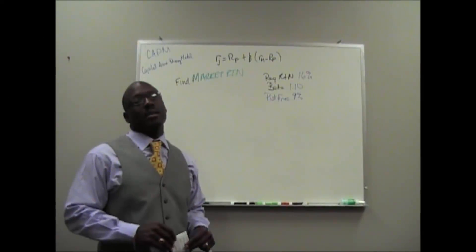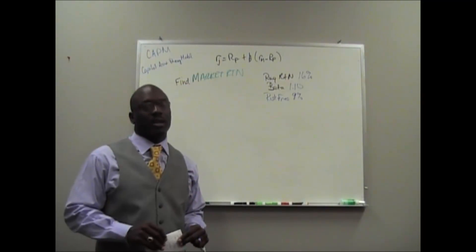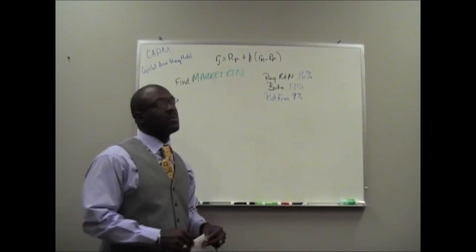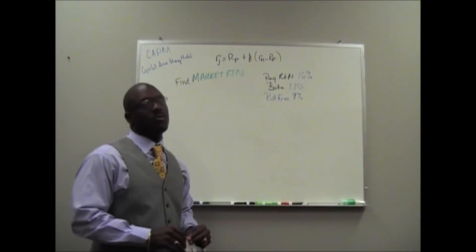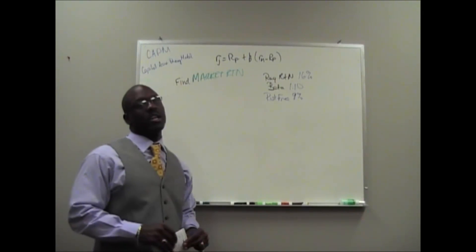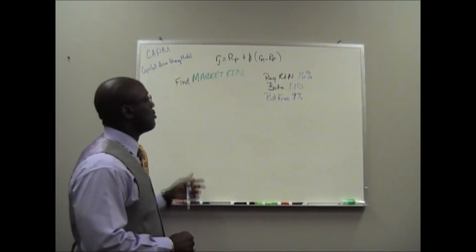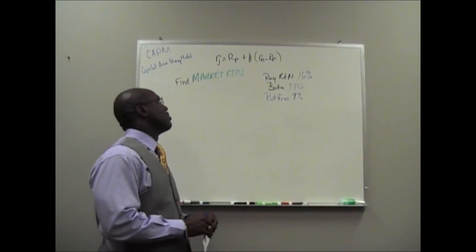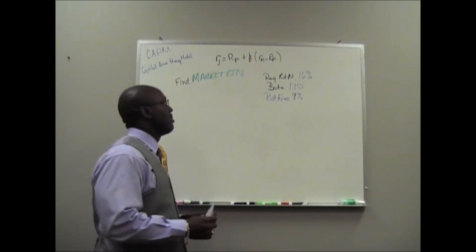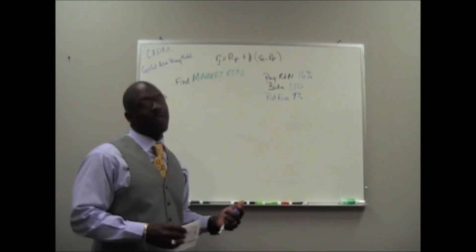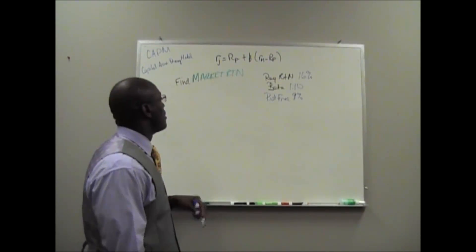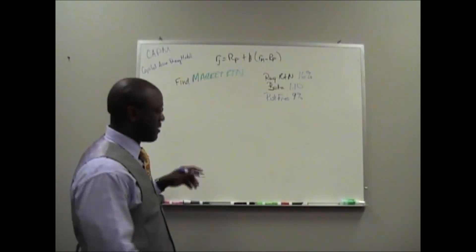Welcome back. Now we'll compute the return on the market. Given the variables: required return of 16%, beta of 1.10, and risk-free rate of 9%. We use the same formula. Return of J equals the risk-free rate plus beta. In parentheses, we have the return of the market minus the risk-free rate. So first, we plug in variables that we were given.